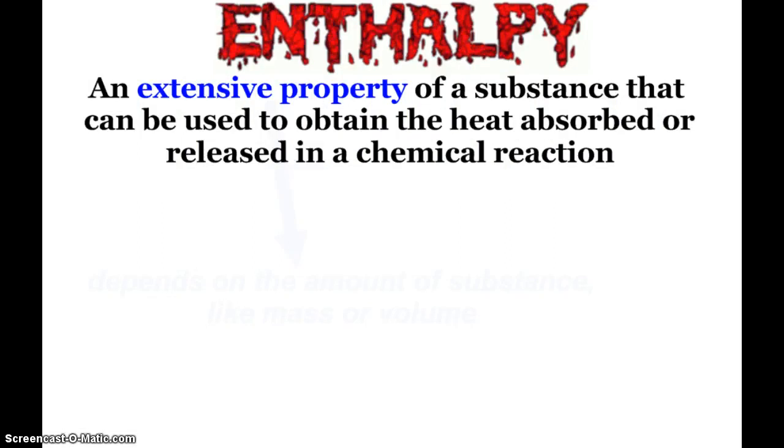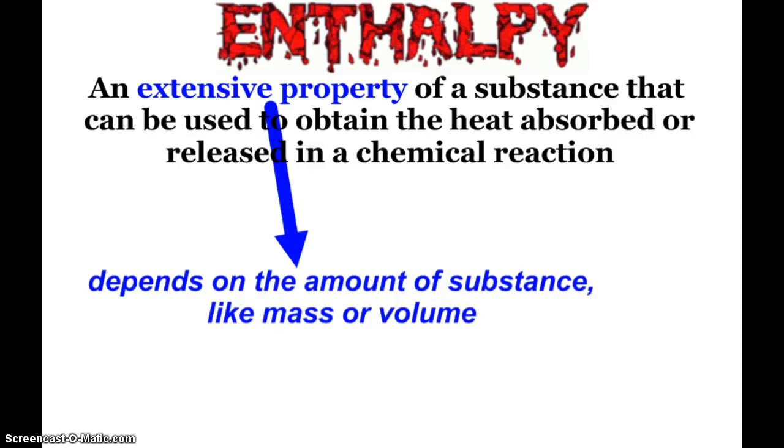Enthalpy is what we call an extensive property of a substance, and it can be used to obtain the heat absorbed or released in a chemical reaction. What's an extensive property? It depends on the amount of substance, like the mass or volume of the substance. The more there is, the more of that property would be displayed. Going back to that hot metal example: if I put a tiny piece of hot metal into water, we're not going to see a lot of heat released. If I put a huge chunk of hot metal into water, much more heat would be released. That's an extensive property.